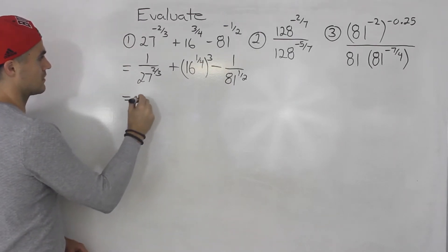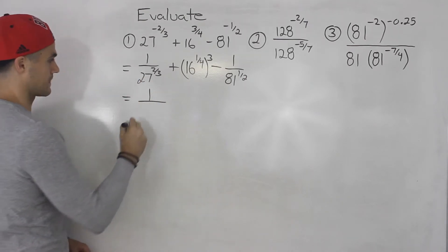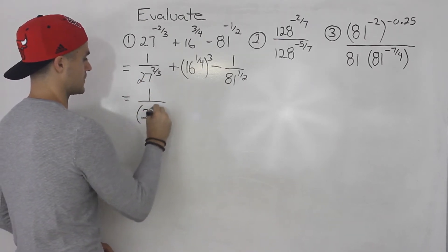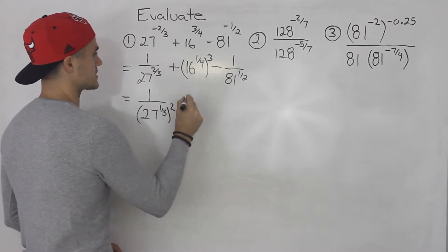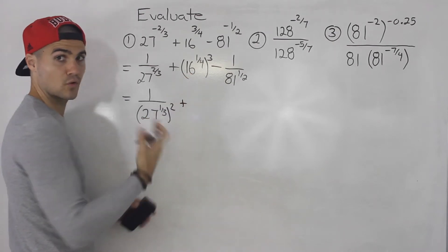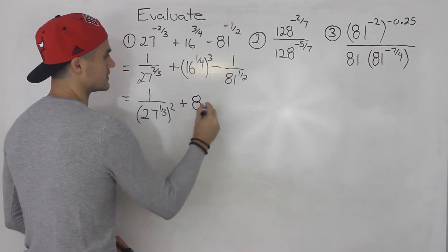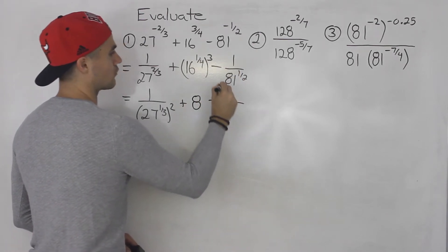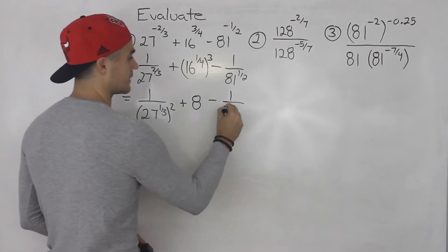So from here, 1 over 27 to the power of 2 over 3 — I'm going to split that up to 27 to the power of 1 over 3, to the power of 2. Plus 16 to the power of 1 over 4 — that's the 4th root of 16, which is 2, and then 2 to the power of 3 is just 8. And then this here would be 1 over 81 to the power of a half — that's the square root of 81, which is just 9.